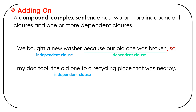Then we have: so my dad took the old one to the recycling place that was nearby. So my dad took the old one to the recycling place is an independent clause joined with a comma and a coordinating conjunction. And that was nearby is acting as a dependent clause — it's actually modifying place, telling where the place is.